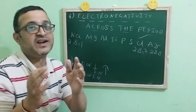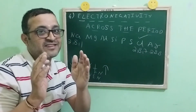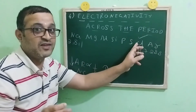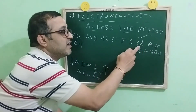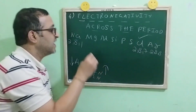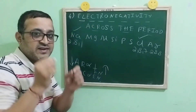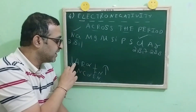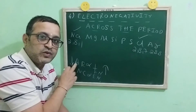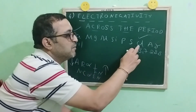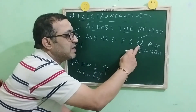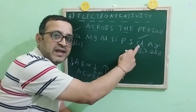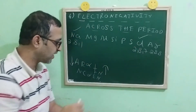We know that noble gases are always bigger than halogens. So chlorine is the smallest atom and sodium is the biggest atom. According to this relationship, the element having maximum electronegativity is chlorine.